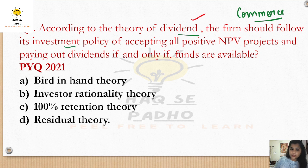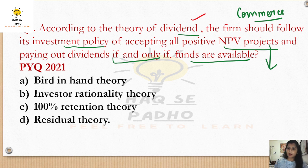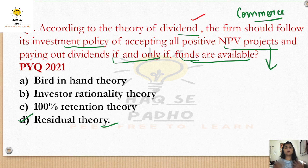According to the residual theory of dividend, the firm should follow its investment policy of accepting all positive NPV projects and paying out dividends if and only if funds are available. First, finance all your projects and investments; then, you give dividends only when funds are available after that. In the residual theory, you finance investment opportunities using retained earnings, and whatever remains is distributed as dividends.